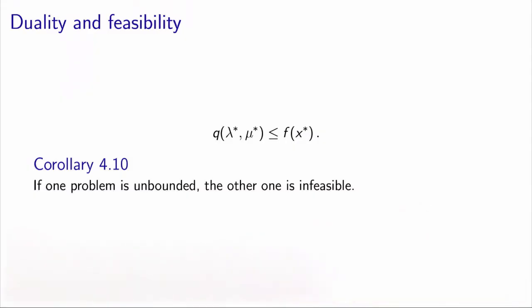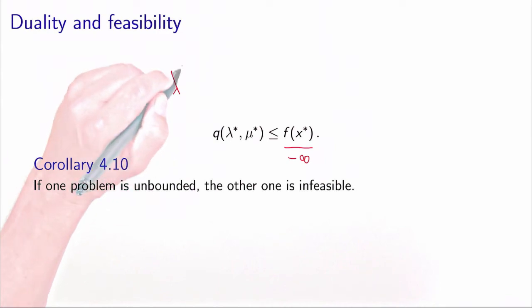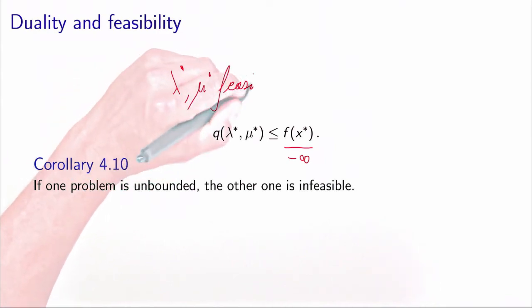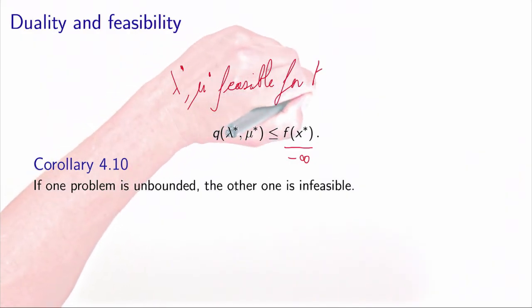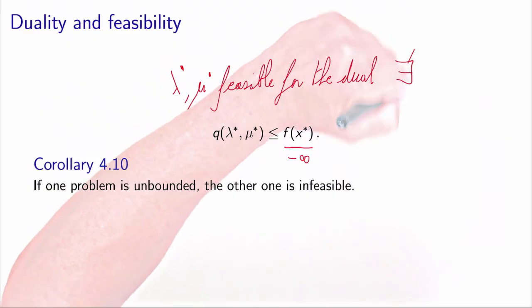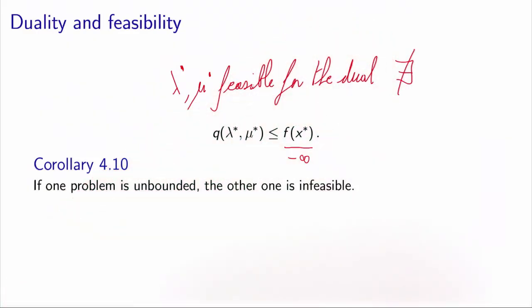There is an immediate consequence of the weak duality theorem. Suppose one of the two problems is unbounded — say the primal value is minus infinity. You cannot find a lower bound on minus infinity, so there is no feasible (lambda*, mu*) for the dual; the dual is infeasible. The same argument works in the other direction: if the optimal dual value is plus infinity, there is no feasible primal solution, because that would provide an upper bound on plus infinity, which is impossible.